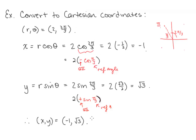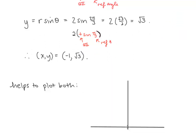Just to check, let's plot this point in polar coordinates and also in Cartesian coordinates on the same plane to see that we end up in about the same spot. For (2, 2π/3), the angle 2π/3 is in this direction, and we're moving out 2 units — that gets us approximately here. For (−1, √3): here's 1 unit, here's negative 1. And yes, this looks like it could be (−1, √3). Remember that √3 < √4 = 2, so yes, this looks like we're in the right spot.